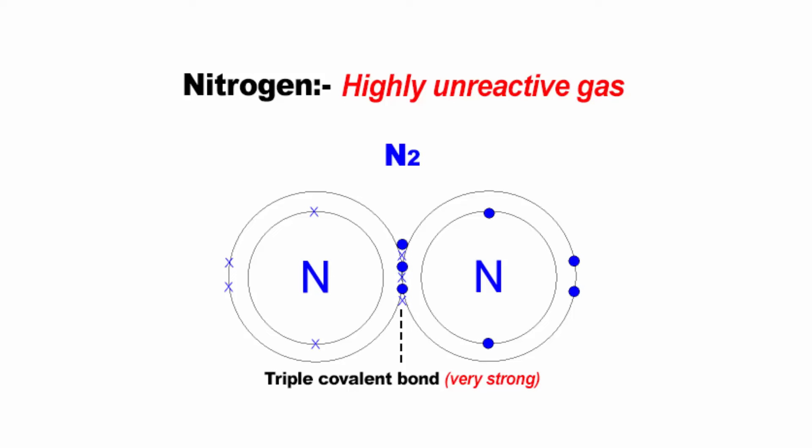In a nutshell, triple bonds are difficult to break because they require a lot of energy to break. Nitrogen molecules have a triple bond and that makes it very unreactive because it requires a huge amount of energy to break the bonds. Now, the big question is, where are you going to find that kind of energy?